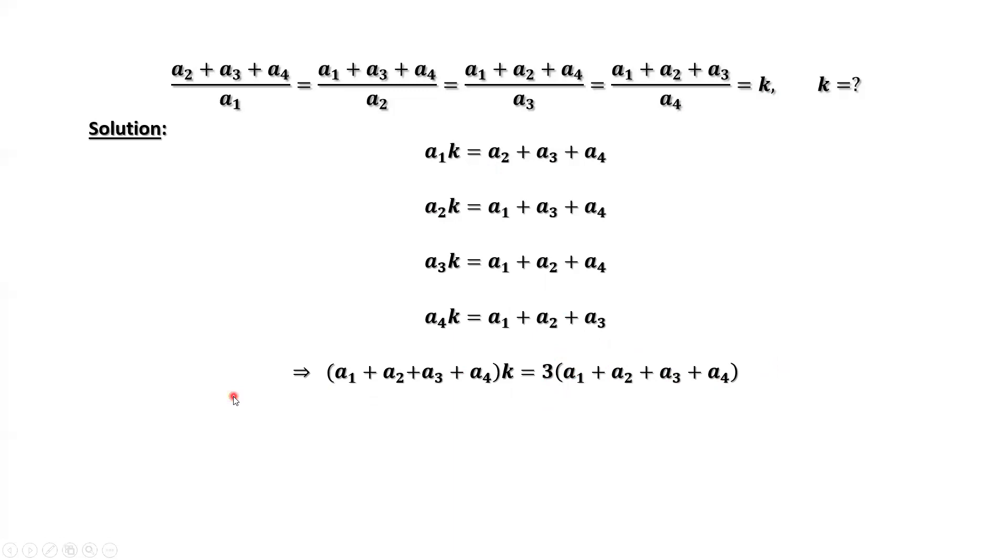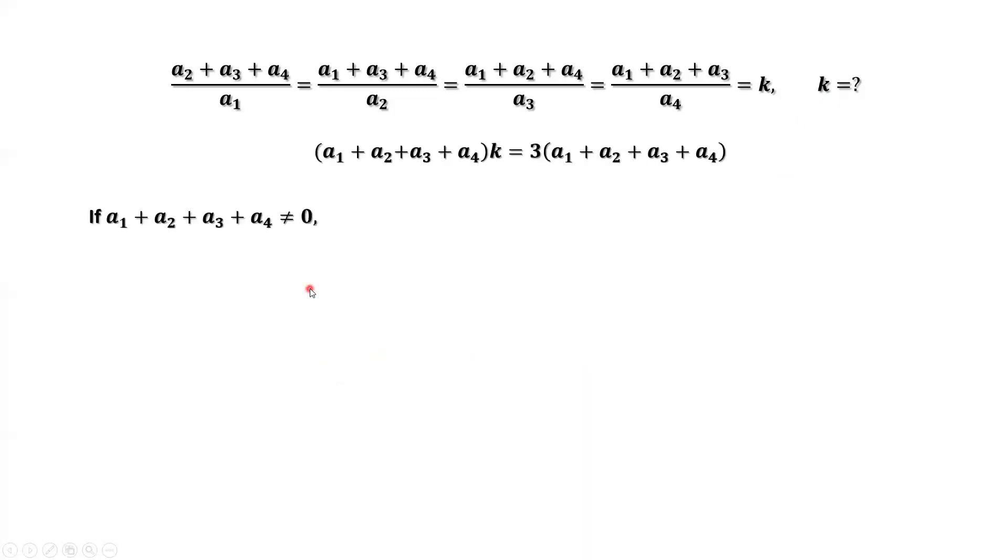What is the question? The question is, what is the K value? From here, can we cancel this? Yes. If A1 plus A2 plus A3 plus A4 is not zero, both sides you can divide by this to get K. K equals 3.